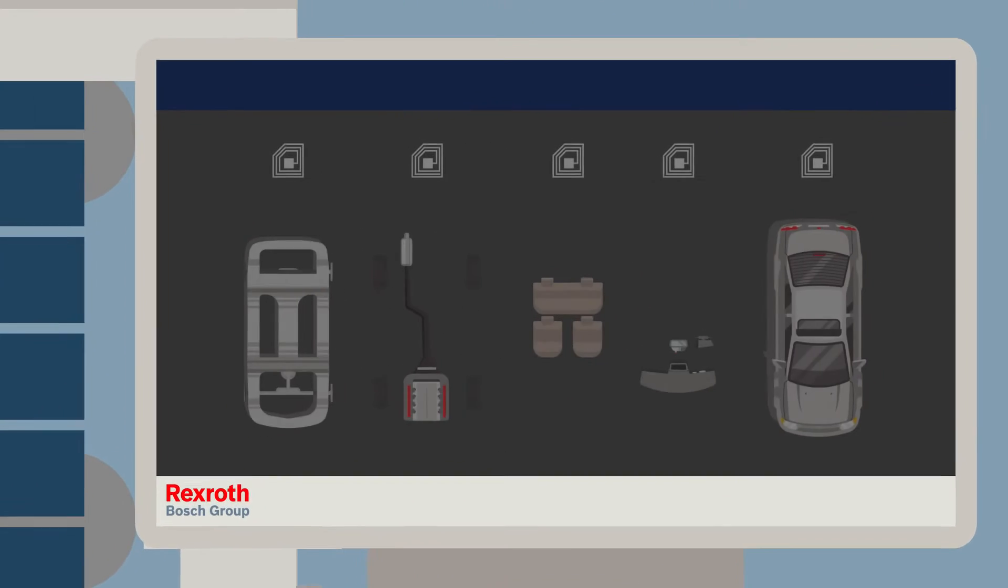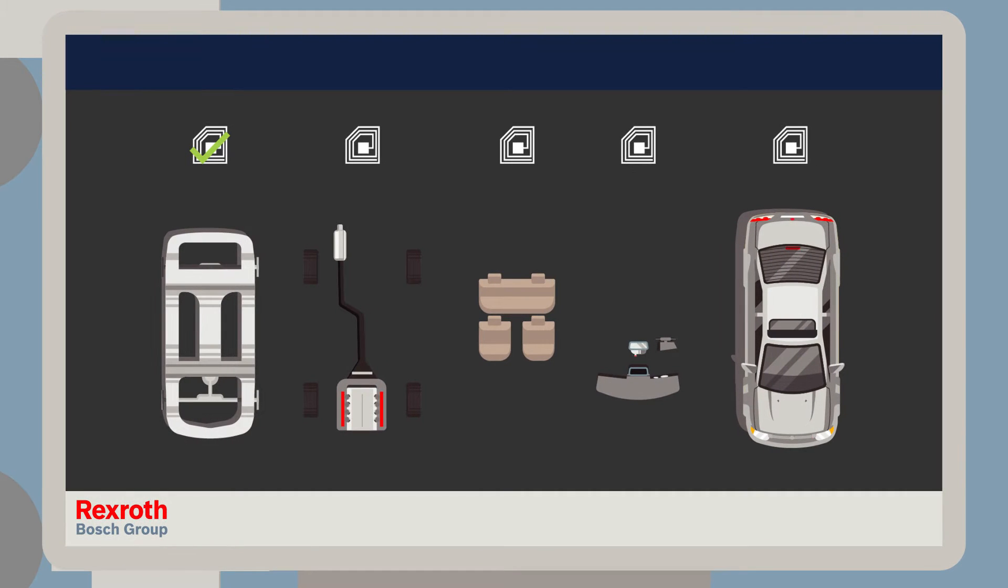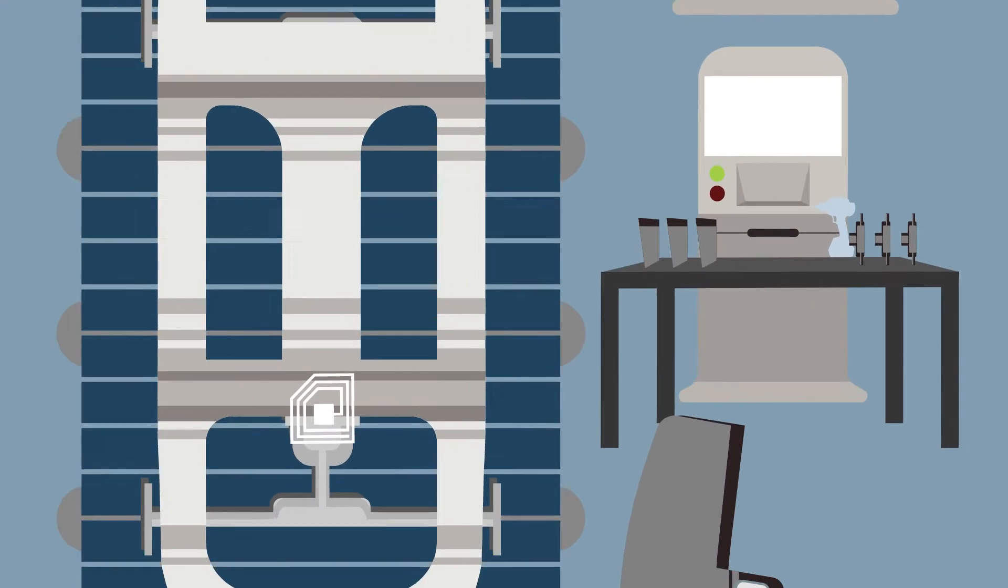This platform gathers all your car specifications and displays what will be produced. The Active Cockpit collects, processes and visualizes all relevant production line data in real time, connecting man, machine and production process.